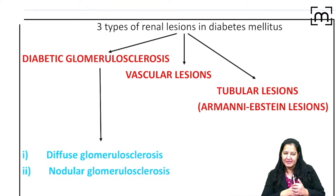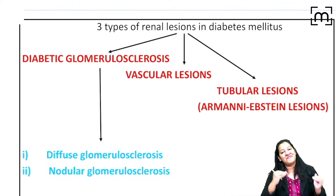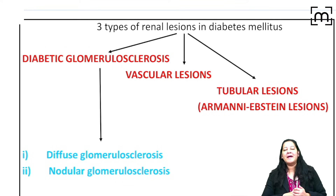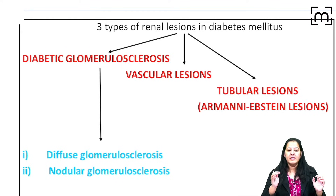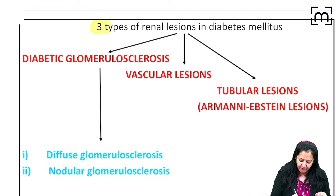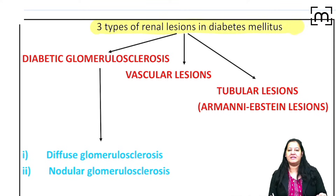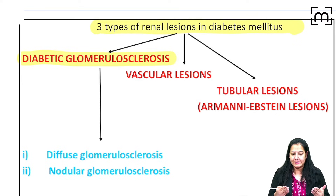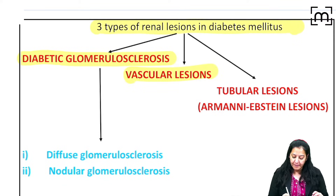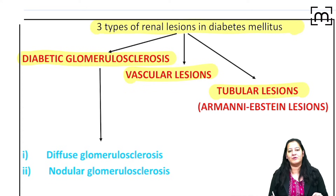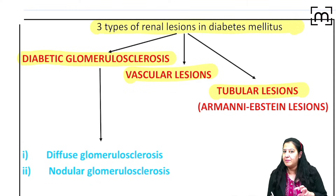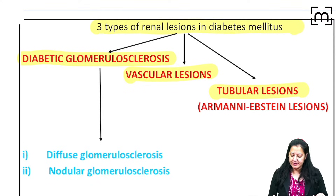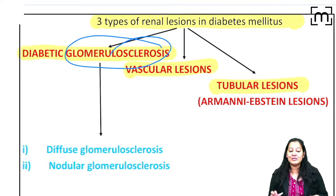In diabetic nephropathy, the glomerulus is involved. There are three types of renal lesions in diabetes: number one, affecting the glomerulus — known as glomerulosclerosis; number two, the blood vessels — known as vascular lesions; and number three, the tubules (PCT, DCT, loop of Henle, collecting tubules) — known as tubular lesions.